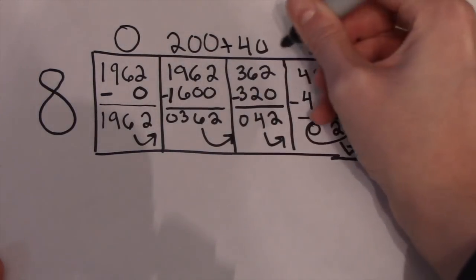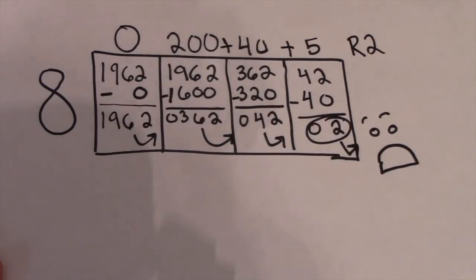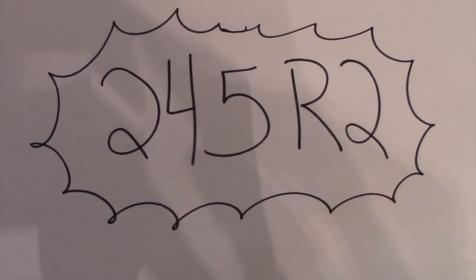We're going to turn this into expanded form. Add them up. And that's right, Flop. We have our final answer. 245, remainder 2.